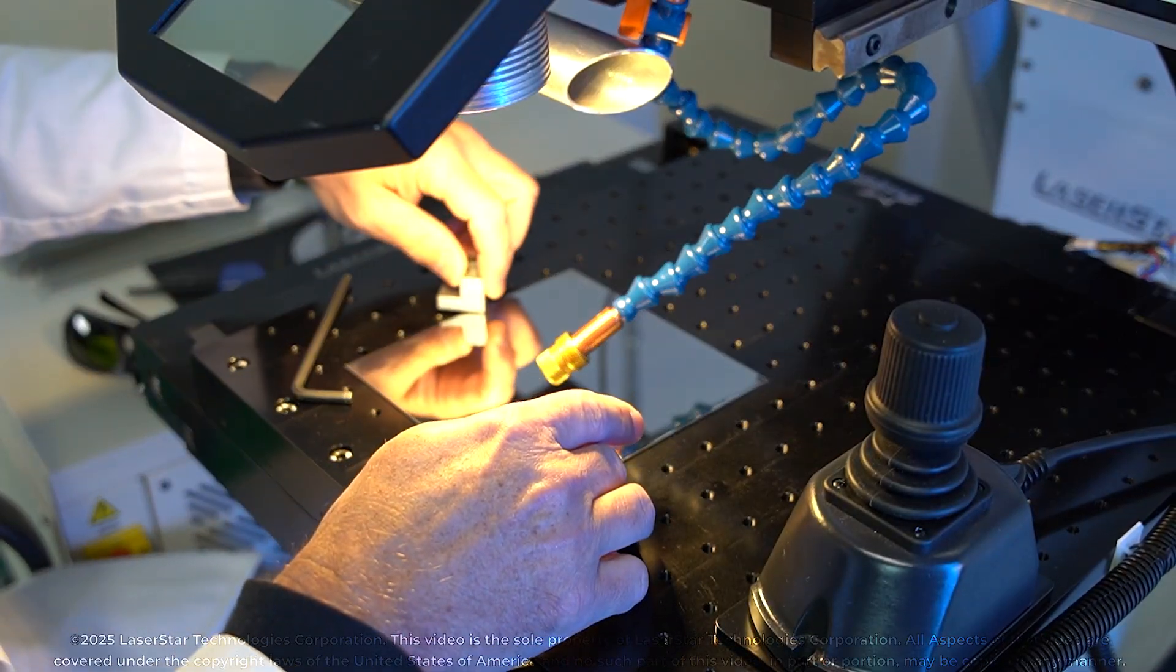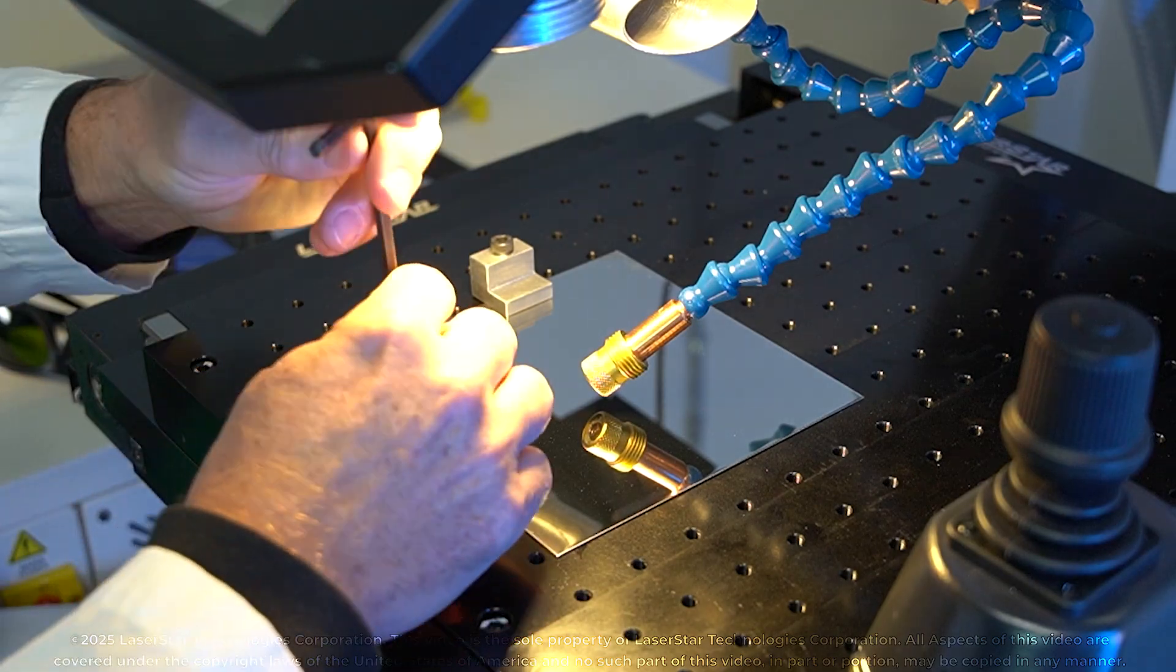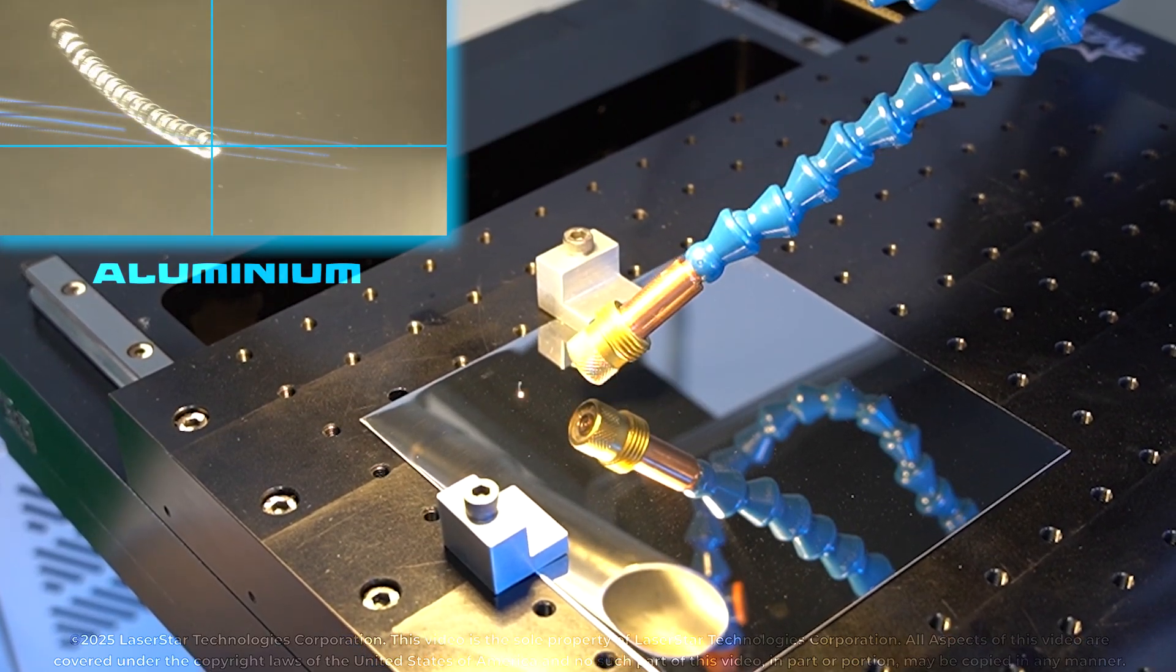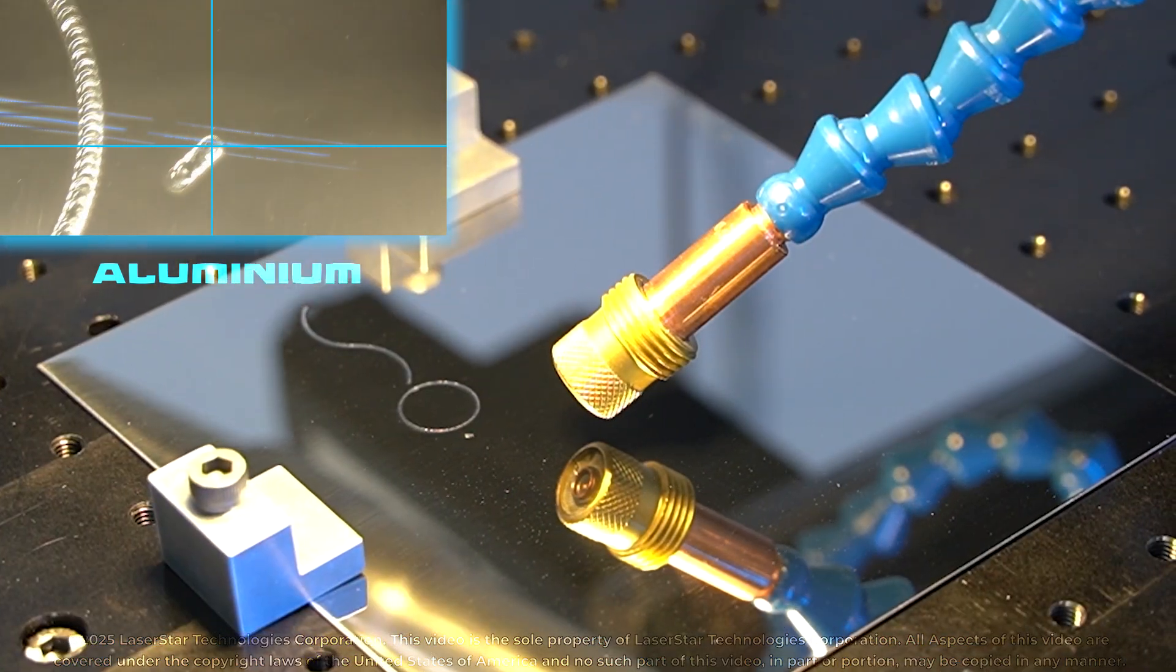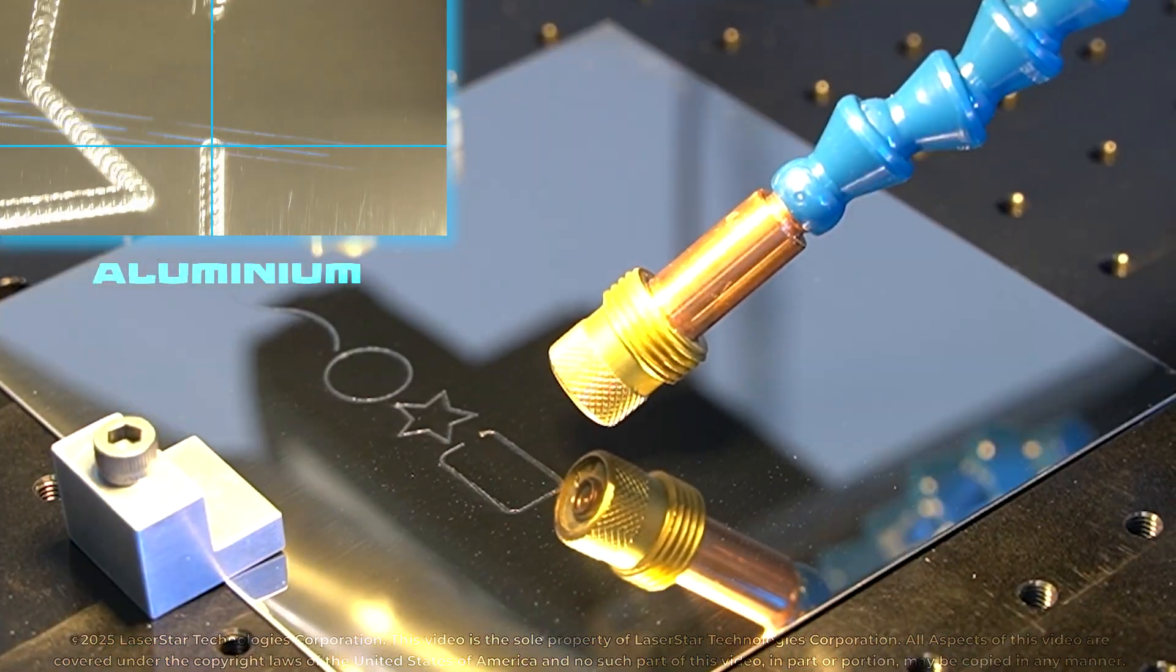With precise fixturing, all the operator needs to do is load and unload the parts, then press run to begin a new cycle.